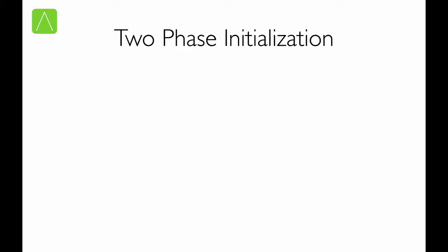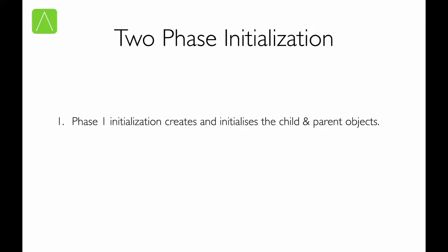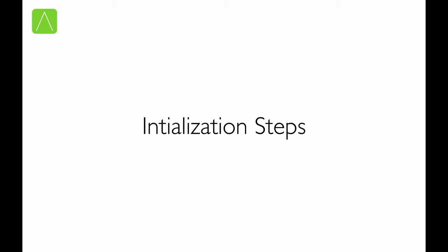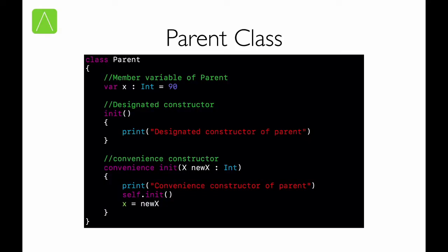Let us now have a look at the two-phase initialization process. Phase 1 creates and initializes the child and parent objects. Phase 2 is when additional initialization is done as per our requirements. Here we have a class called Parent. It contains a member variable x which has a default value of 90. Then there is a designated initializer. We then have a convenience initializer — note the keyword convenience before the init keyword; this is how we mark an initializer as a convenience initializer. Note that the convenience initializer first delegates to the designated initializer before assigning a value to x.